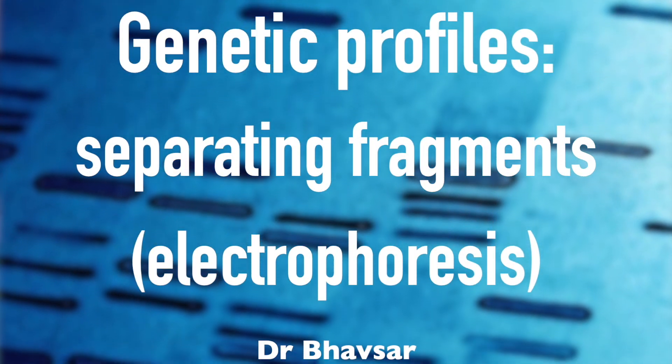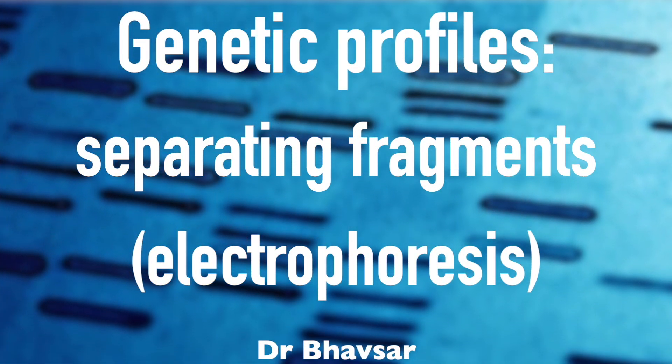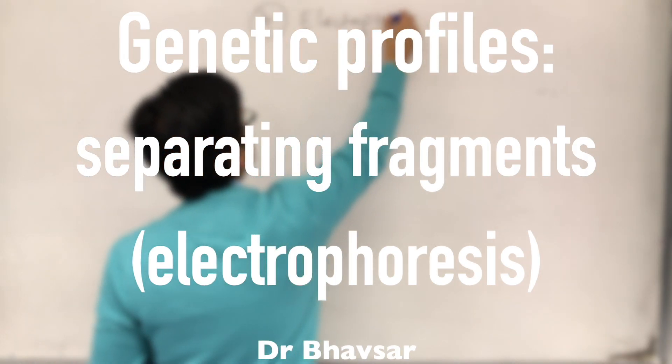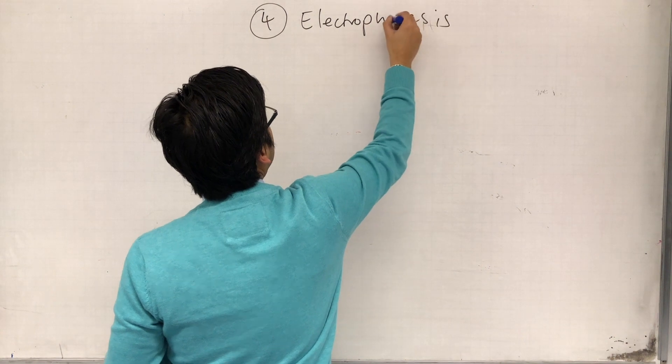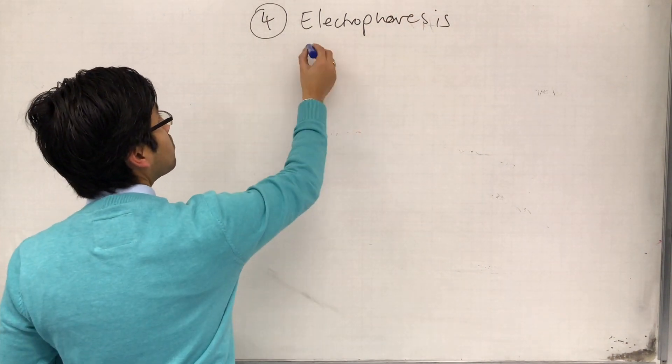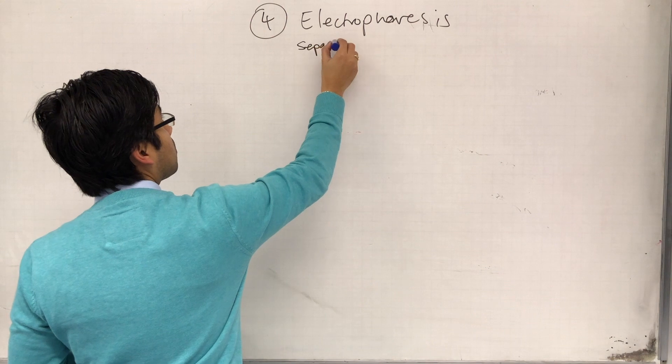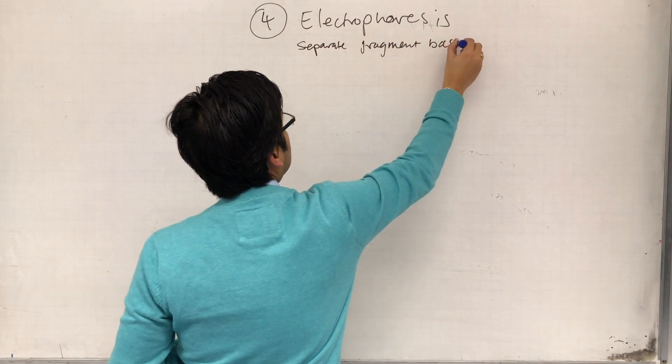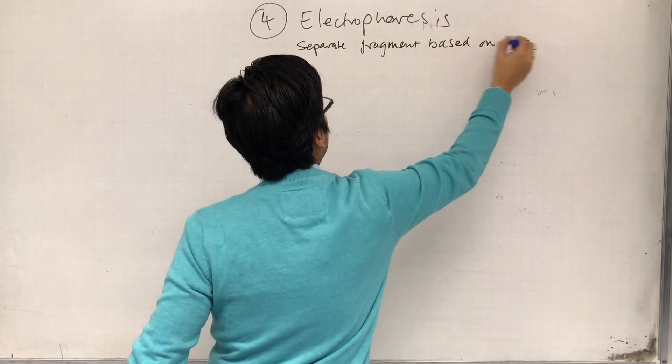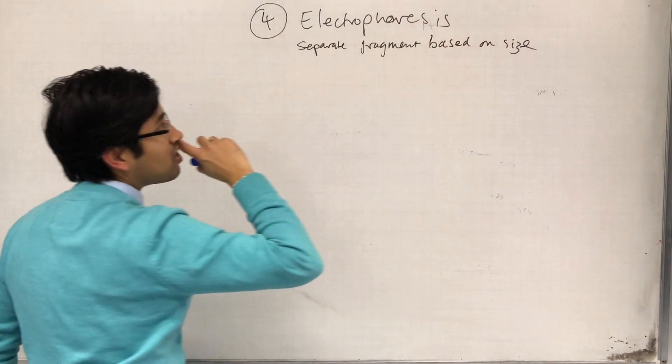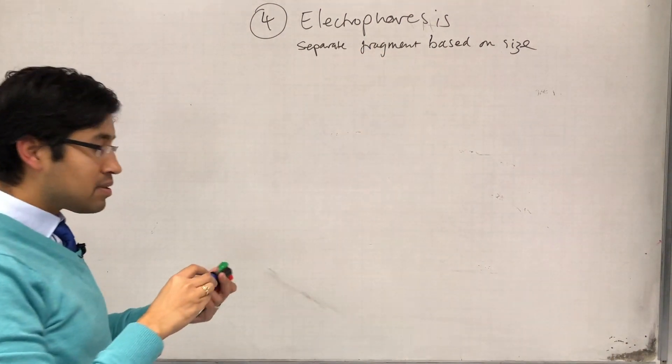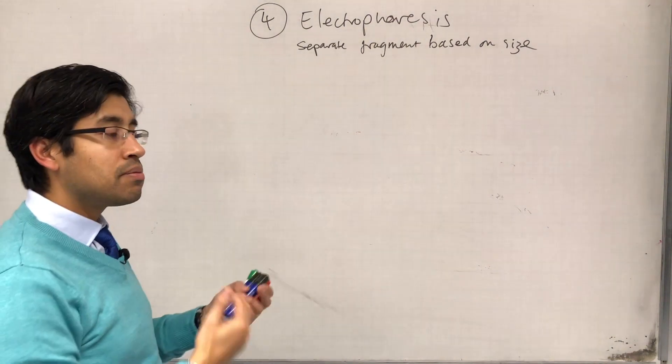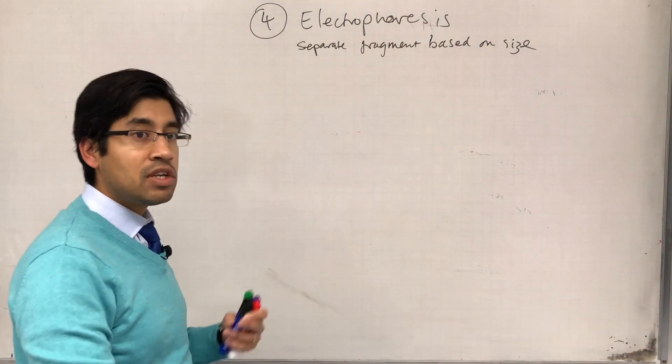So the next stage is electrophoresis, where we are going to separate the fragments based on size. Because remember, it all came back to the size of the fragments, which was dependent on the number of STR repeats, which was the key differentiating factor between individuals and species.